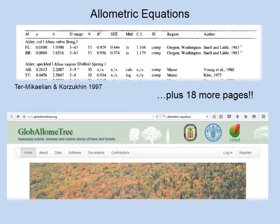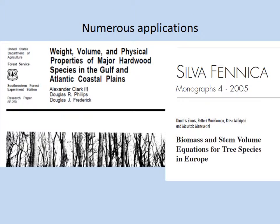Allometric biomass equations are available for many tree species. The Termicalian article compiles pages of published equations, and the Global Lomay website includes tree allometric equations from forest trees found across the globe. Tree allometric equations are used to estimate stand volume and biomass, and are commonly used to inventory forests. Such allometric equations are commonly known as volume equations and biomass equations, and are available in the literature for all major timber species.